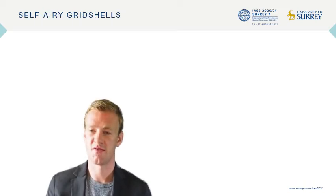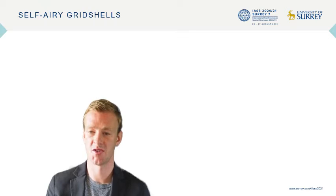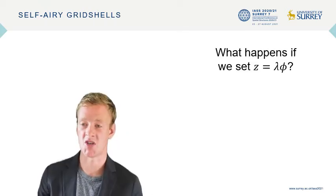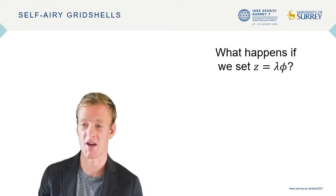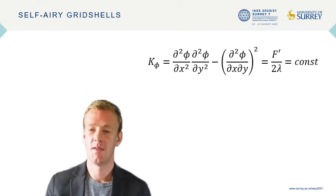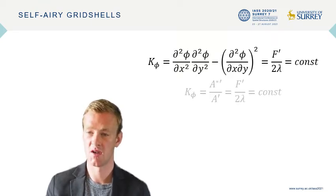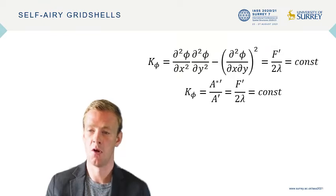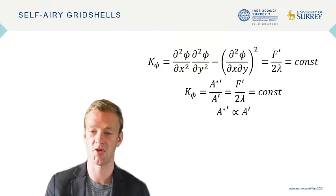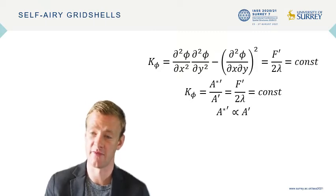Self-airy surfaces have numerous benefits including close alignment of the principal stress and principal curvature directions. We ask the question: what if z equals lambda times phi, where z is a shell, phi is the airy stress function and lambda is a scalar — essentially this is a self-airy. These UPL self-airy shells have constant isotropic Gaussian curvature. Using the discrete definition of isotropic Gaussian curvature, one can show that the area of the force polygon must be proportional to the tributary area of the reciprocal node in the form diagram.